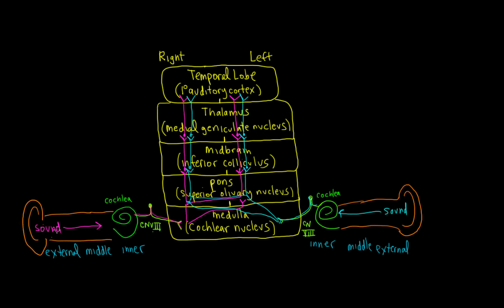We're going to start first with sound entering the right ear, shown here in magenta. Sound enters the external auditory canal, then the middle ear with the important bones—the malleus, incus, and stapes—and then the cochlear portion of the inner ear.